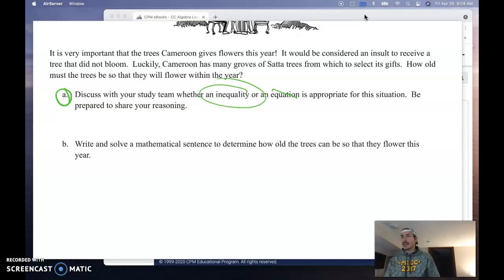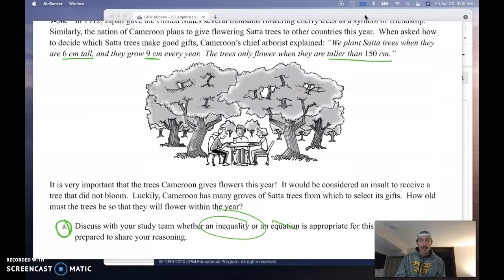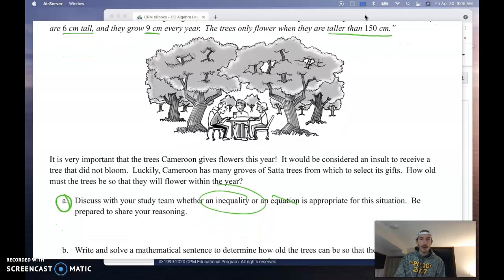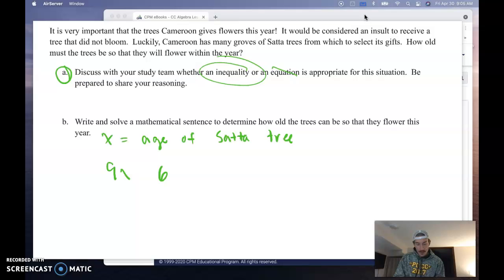It says write and solve a mathematical sentence to determine how old trees can be so that they flower this year. I'm going to let x equal the age of the sada trees. I already identified my starting height. That's our y-intercept. So my starting height is going to be 6. And then we also identified the growth rate. They grow 9 centimeters every year. We multiply the growth rate by the age. So in this case, it's going to be 9 times the age of the tree. And because that's added to the starting height, we take that starting height and the growth is on top of that.